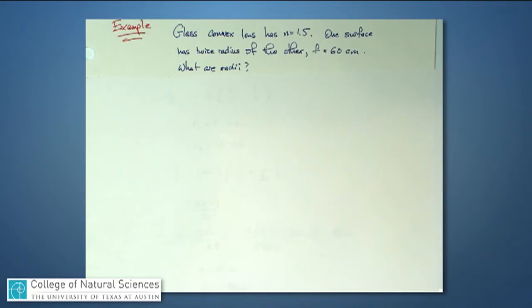This one reads: a glass convex lens has an index of refraction of one and a half, and we are told that one surface of the lens has twice the radius of curvature of the other. The focal length of this lens will be 60 centimeters. It's convex, so it's a positive 60 centimeters. What are the two radii?